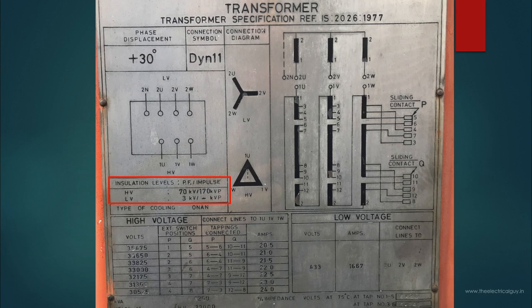This insulation level also consists of switching impulse voltage which is generally applicable above 245kV only. This is a nameplate of 33kV and hence it is not applicable for this particular transformer. Let's understand why these insulation levels are important.